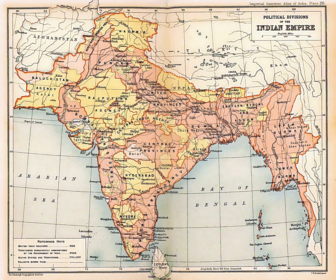During the partition, there was no holocaust in Gujarat as there was in Punjab and Bengal. Only about 2.2% of the migrants to Pakistan were from Gujarat and Bombay City, and of them about 75% went to Karachi due to business interests.